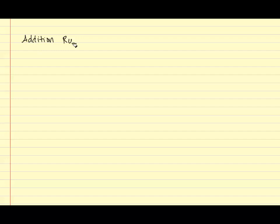Question number one asks: what is the probability of selecting a king or queen from a deck of cards? Since we are trying to find the probability of A or B, we are going to use the addition rule. Recall there are two formulas for the addition rule. For the probability of A or B, we can have the probability of A plus the probability of B. This rule is used for mutually exclusive events.